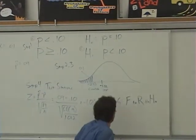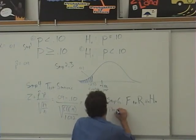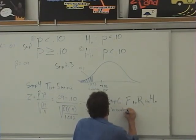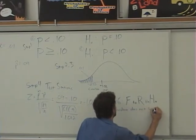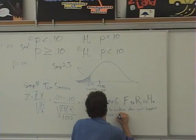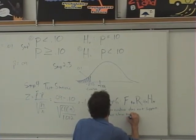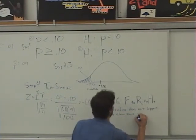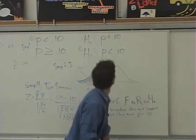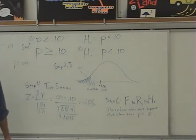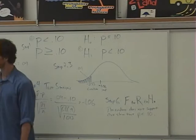So here we'd say the evidence does not support our claim that P is less than 0.10. That was our claim, that the proportion was less than 10%.